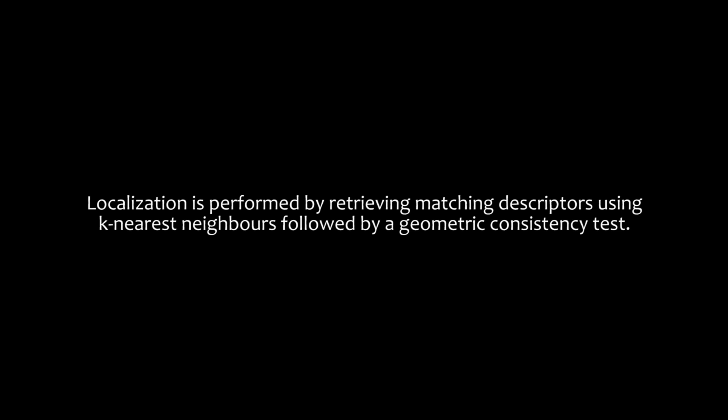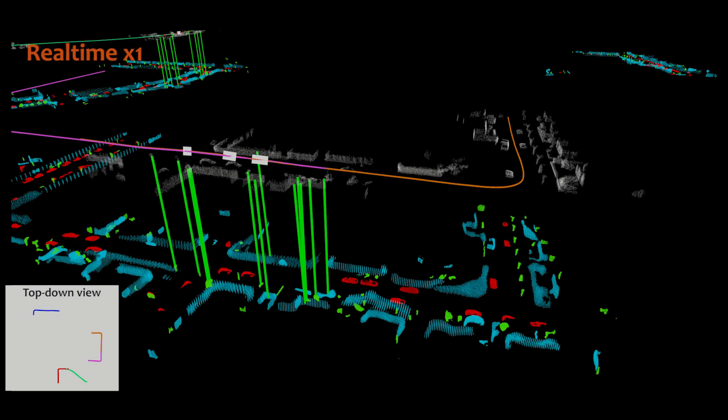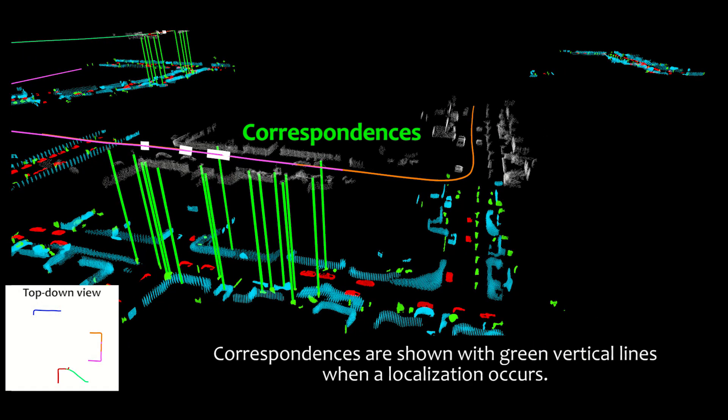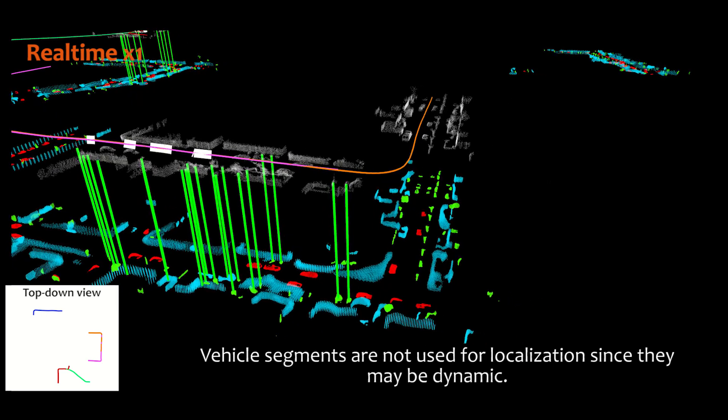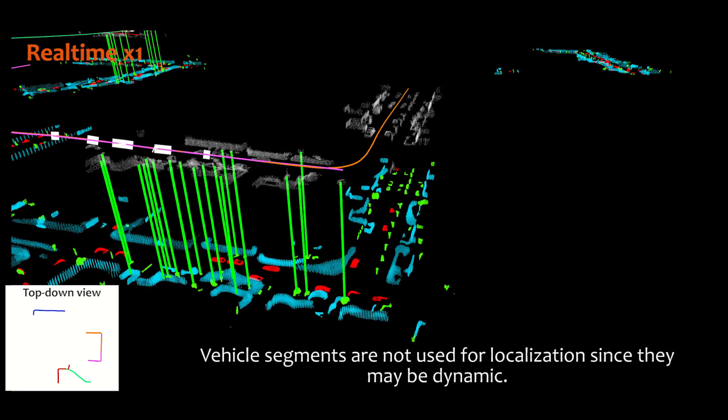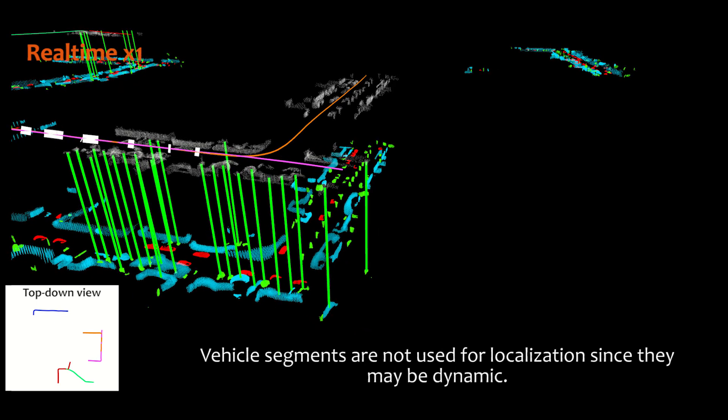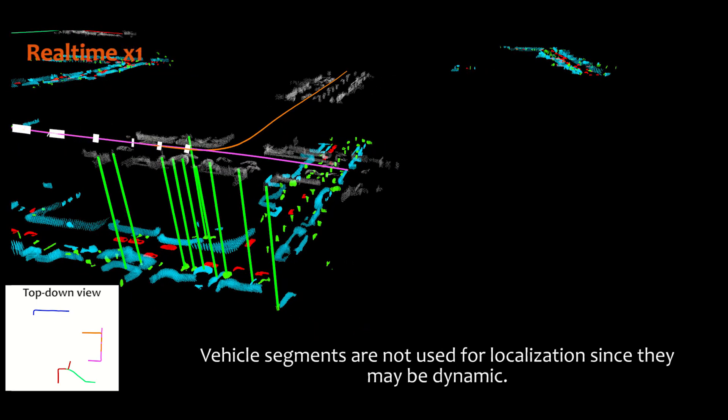Localization is performed by retrieving matching descriptors using KNN, followed by a geometric consistency test. Correspondences are shown with green vertical lines when a localization occurs. Note that vehicle segments are not used for localization since they may be dynamic.